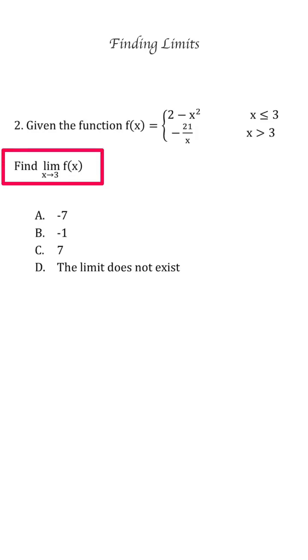Here they are saying find limit at x approaches 3 for the function f(x). To find the limit at x approaches 3, we need to find the limit from the left of 3 and the right of 3. If they are equal, then we find the value. If they are not equal, we say it does not exist.